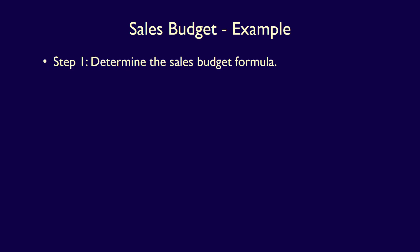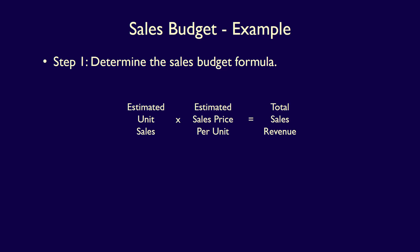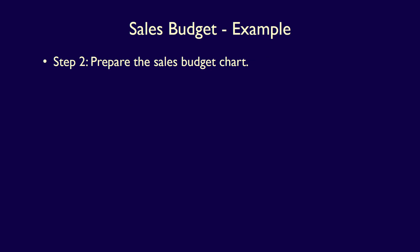Step one of producing a sales budget is to determine the sales budget formula. Estimated unit sales multiplied by estimated sales price per unit is equal to total sales revenue. We now have to take this formula and apply it in step two when we prepare the sales budget chart.